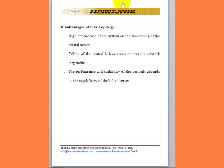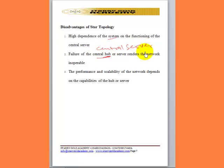Star topology also has some disadvantages. The first is dependency on the functioning of the central server. The moment the central server fails, the entire network will collapse, and all computers connected to it depend 100% on the server. The failure of the central hub or server renders the entire network useless.